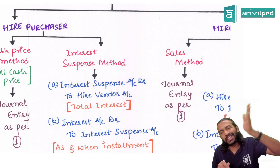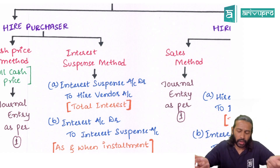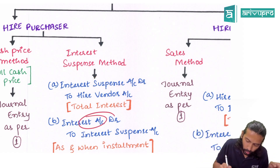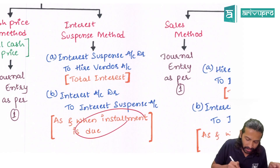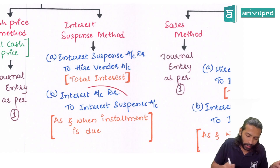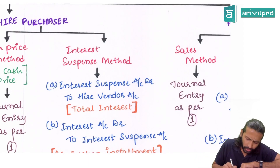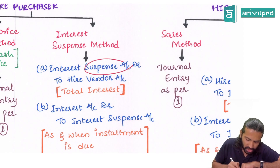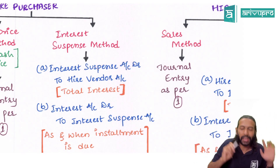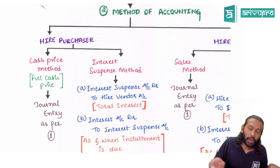As and when each installment becomes due, you transfer the relevant interest from Interest Suspense Account to Interest Account: Interest Account debit to Interest Suspense Account. This entry is passed each time an installment is due — annually if annual, half-yearly if half-yearly, quarterly if quarterly. By the end of the hire purchase period — say four years — you would have passed this entry four times, and the Interest Suspense Account would have become zero, nullified. That is how Interest Suspense Method accounting works for the hire purchaser.